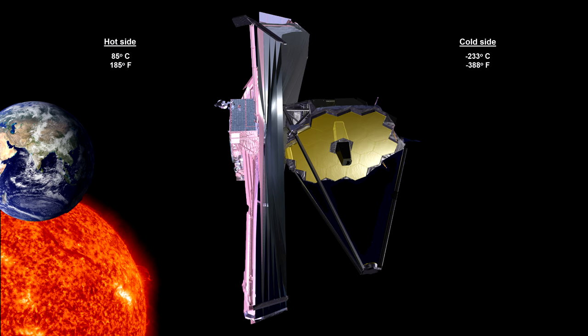If either the Sun, Earth, or the Moon are on the cold side, the telescope won't work. So to have the sunshield be effective protection against the light and heat of the Sun, Earth, and Moon, these bodies have to all be located in the same direction.